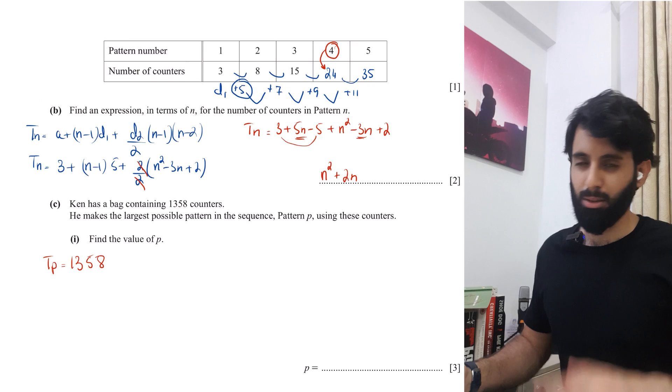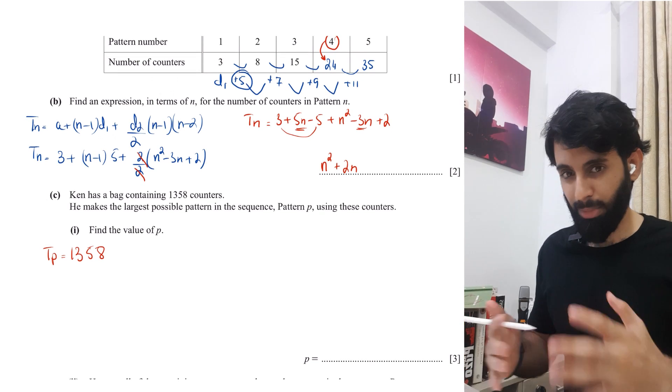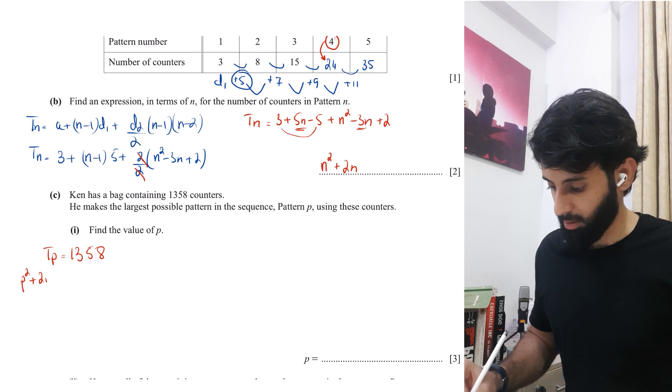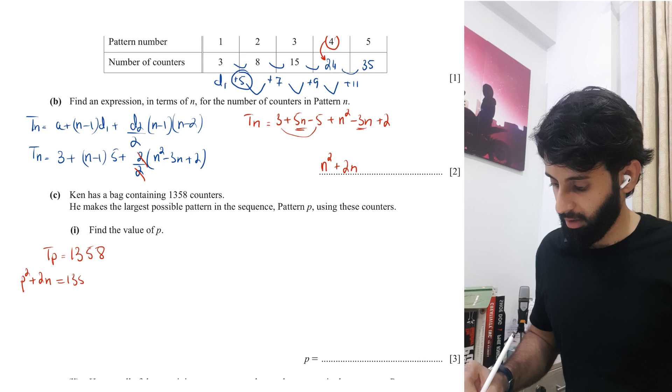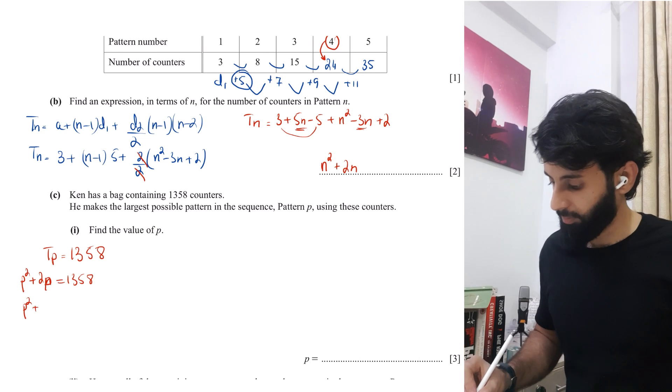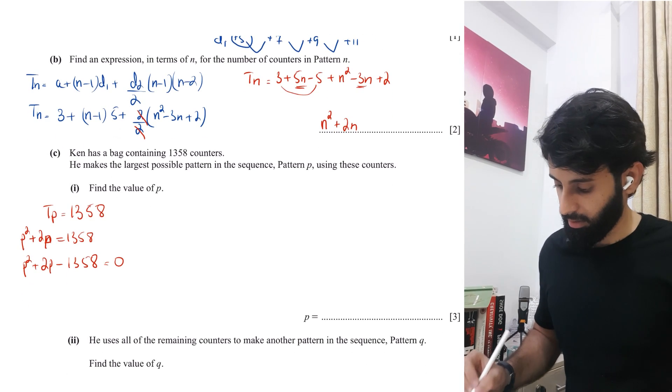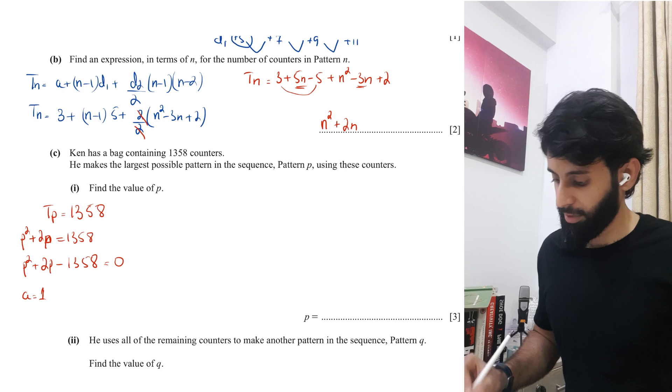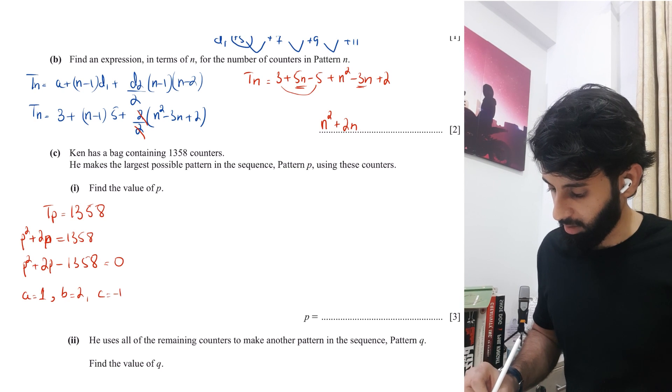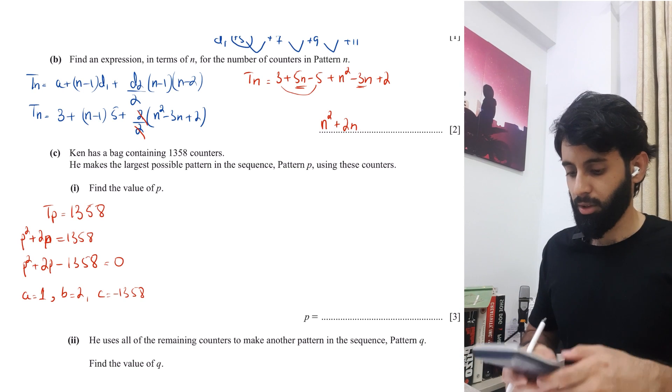So what that basically means is, suppose this was the 10th pattern. So what you would simply do is you would plug in 10 in place of N, but since this is pattern number P, I'm going to plug in P in place of N. So P square plus 2P is equals to 1,358. Now this looks like a quadratic equation. Now A is basically the coefficient of X square, which in this case is P. So no big deal. B is 2 and C is minus 1,358.